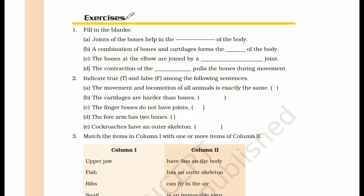Statement (b): cartilages are harder than bones. This is FALSE. As we read in the chapter, cartilages are not harder than bones. For example, the cartilage in our ear can be bent and folded, whereas bones cannot be bent.